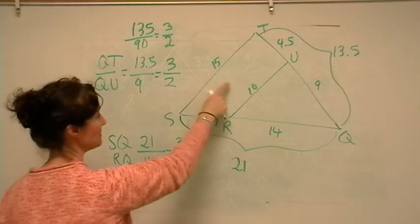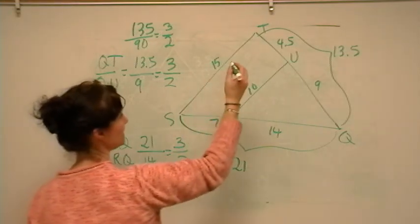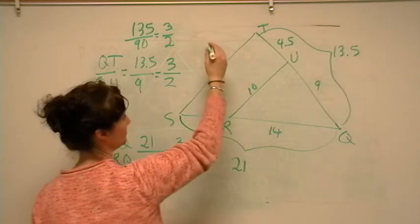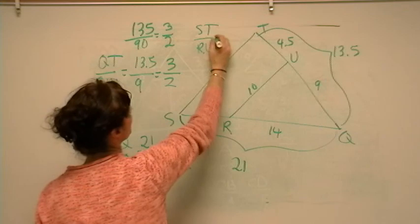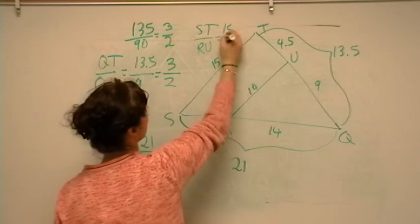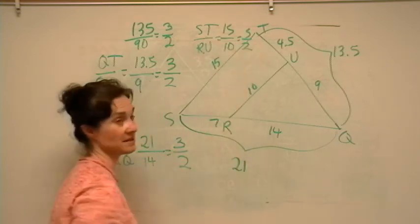Okay, and then the medium side is 15 to 10. So that's ST to RU. ST to RU, which is 15 to 10, and 3 halves, once again.